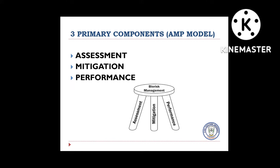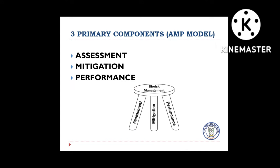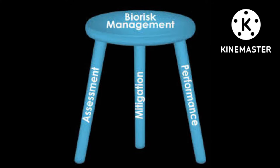These components are collectively captured by the AMP model from the World Health Organization. This model requires that control measures be based on a robust risk assessment and a continuous evaluation of the effectiveness and suitability of control measures. Identified risks can be mitigated, avoided, limited, transferred to an outside entity, or accepted. The Biorisk Management Model is like a three-legged stool — if one or two components fail, then the entire Biorisk Management fails.